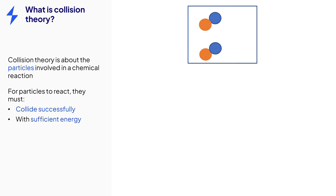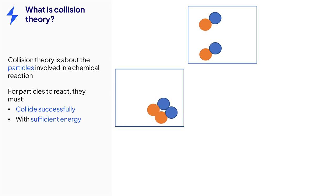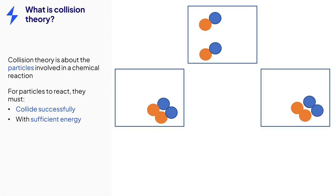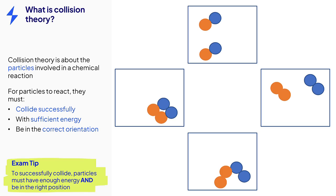A successful collision depends on the amount of energy particles have. The particles may not have enough energy, so they move slowly, touch but don't react. Or the particles may have too much energy and essentially bounce off each other unreacted. Particles must also be in an appropriate position to react. A successful collision is dependent on both the energy and position of the particles — this second point is often overlooked.